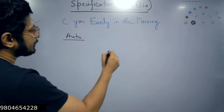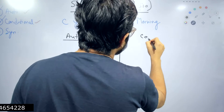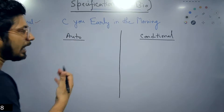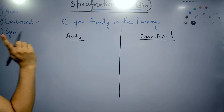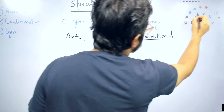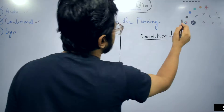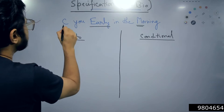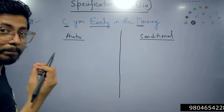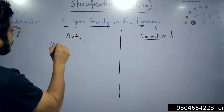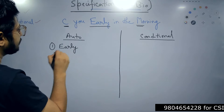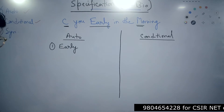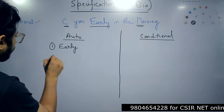For that I am going to draw this table — first for autonomous specification, and then we will see the difference with conditional specification. From the sentence 'See you early in the morning,' the capitalized letters mean something important. Starting with 'Early' — the timing of this specification happens early during the developmental phase. This is the very first thing regarding autonomous specification.